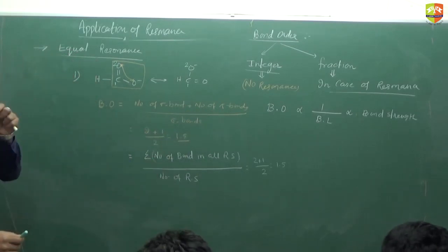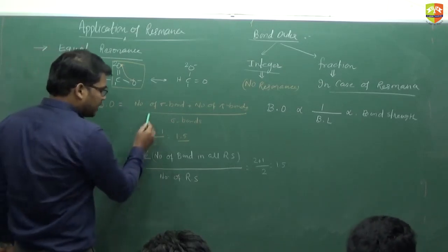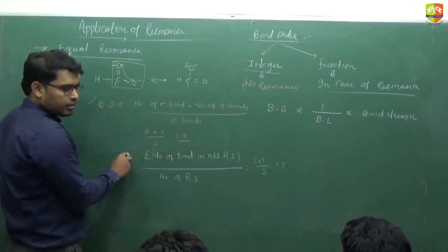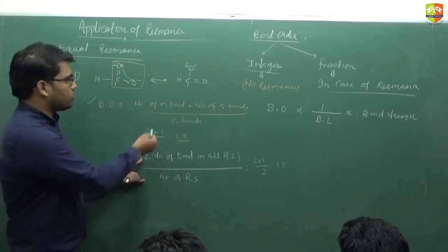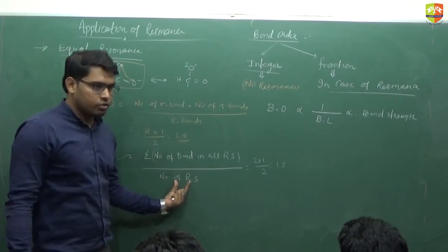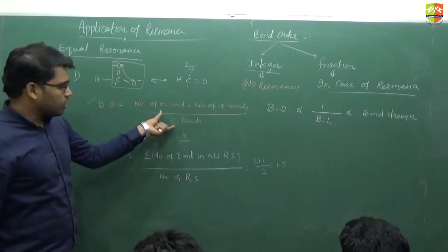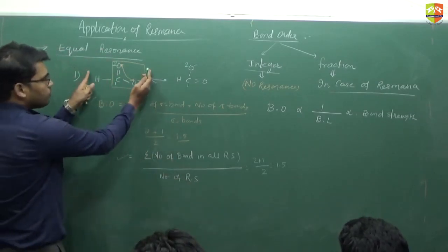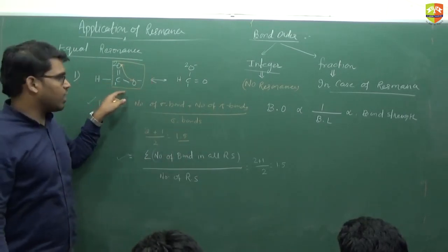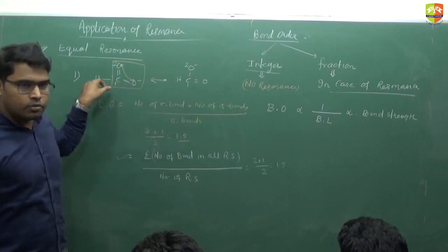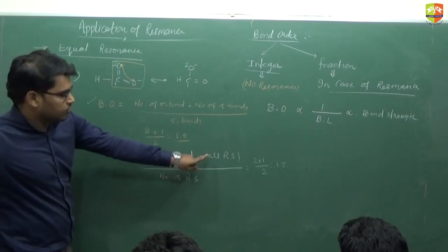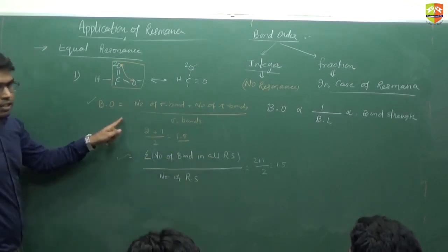The two formulas give the same answer. The disadvantage of the second formula is that you must draw all the resonating structures and know the number of RS. If a molecule has 5 or 6 resonating structures, you have to draw them all. It is better to use the first formula — sigma plus pi divided by sigma — directly from the single molecular structure.